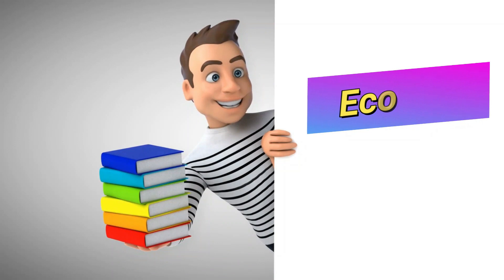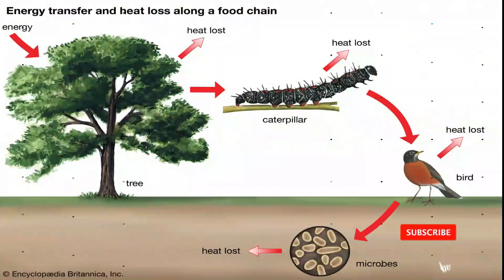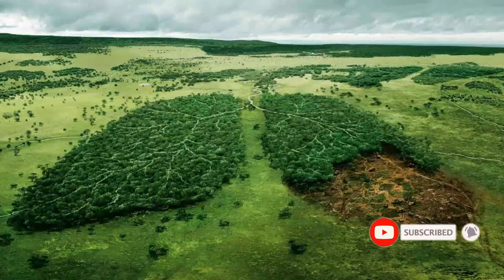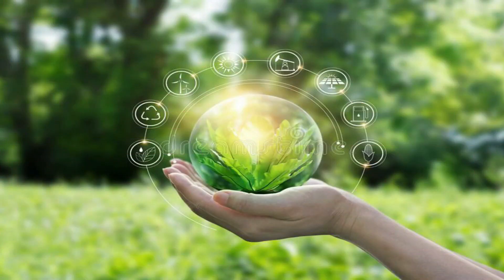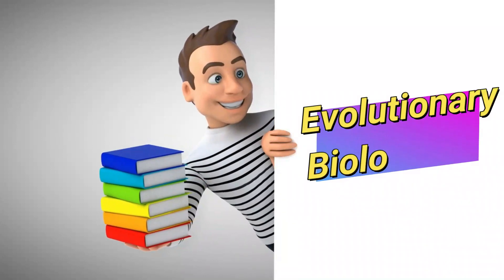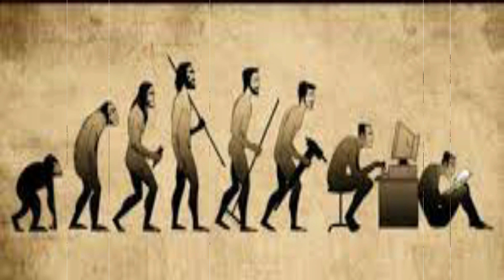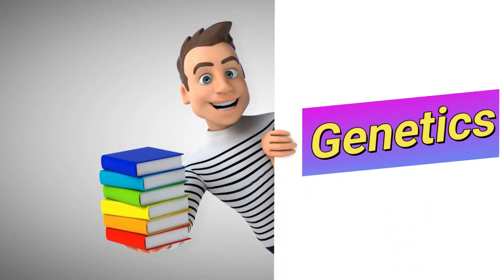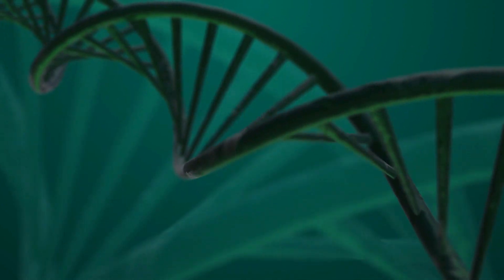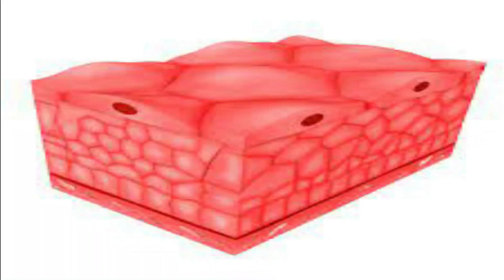The next branch is ecology, also called environmental biology. Ecology is the scientific study of the distribution and abundance of organisms, the interaction among organisms, and the interaction between organisms and their abiotic environment. The next branch is evolutionary biology — the process of gradual development of living organisms from their earlier forms. The next branch is genetics, concerned with the study of genes, genetic variation, and heredity in living organisms.